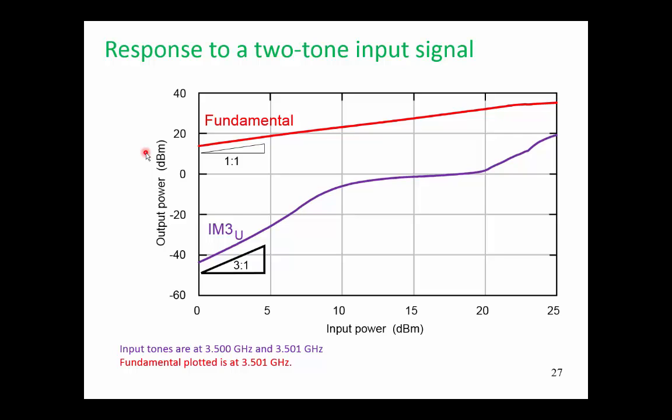Some more interesting information. And here I've plotted the fundamental response and IM3 responses on the same graph. There are two input tones here. One tone is at 3.500 GHz and the other is at 3.501 GHz. The fundamental response is the output signal at just one of those tones. Initially we see at low input powers, so we're plotting output power versus input power, we see a curve with a one-to-one slope. And eventually that curve rolls over as we have gain compression. An interesting result is our third order intermodulation product. At low input powers, we have a three-to-one slope.